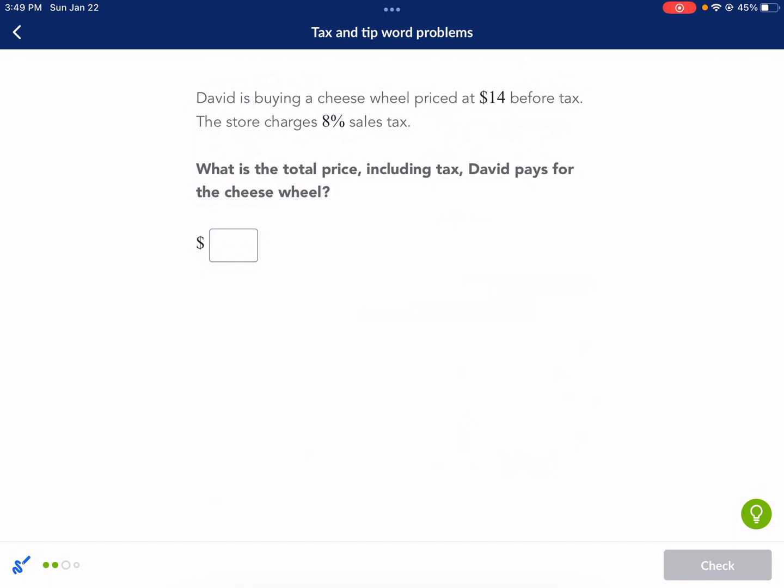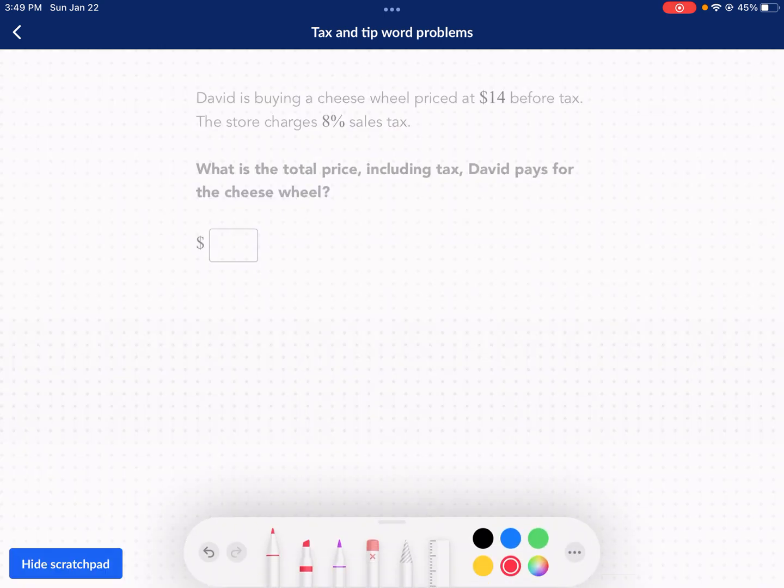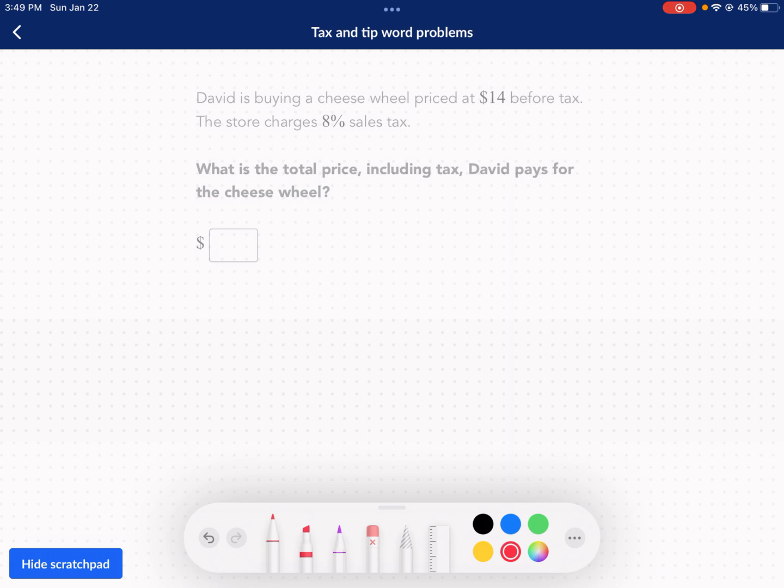All right. Next question. David is buying a cheese wheel priced at $14 before tax. The store charges 8% sales tax. What is the total price, including tax David pays for the cheese wheel? This is just what I was talking about earlier. So we know we could find the tax amount added to the original amount and that would give us our final amount. I'm going to take a shortcut. I'm going to do 14 times, and then I'm going to have a 0.08 here, but I'm add one to it. That was my sales tax written as a decimal. I'm going to add one to it, multiply it by the original price, and that's going to tell me my final price after tax. So I just do 14 times 1.08 and it makes it a lot more simple.